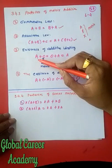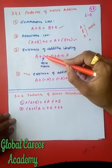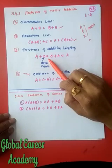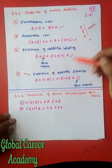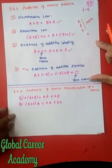Additive identity: if we have matrix A and we add the zero matrix — denoted by O — then A plus O equals O plus A, and the final answer is matrix A. It is very easy.